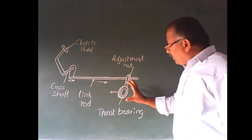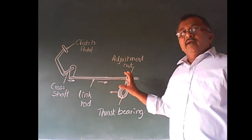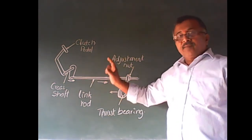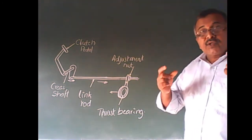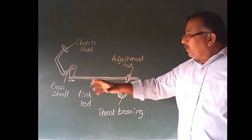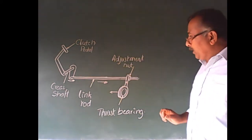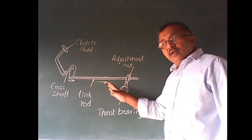When that release bearing creates the pressure on the release fingers to move the pressure plate backward, away from the friction plate. Then what happens? Clutch goes to disengage.